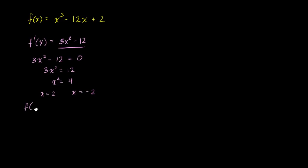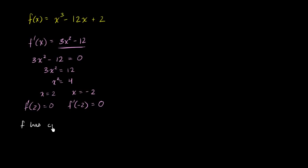Just to be clear: f prime of 2 gives us 3 times 4 minus 12, which is equal to 0. And f prime of negative 2, for the same reason, is also equal to 0. So we can say that f has critical points at x equals 2 and x equals negative 2.